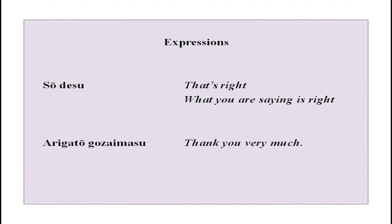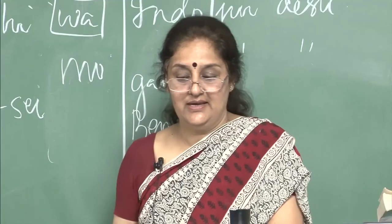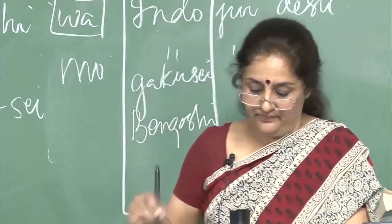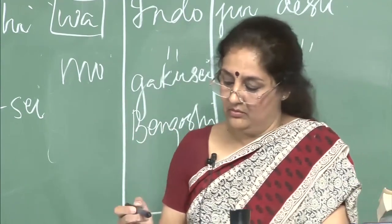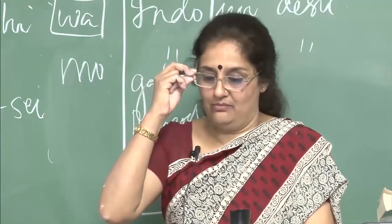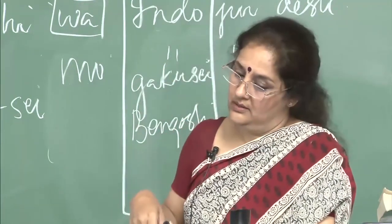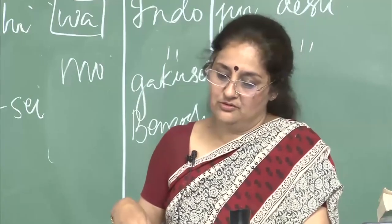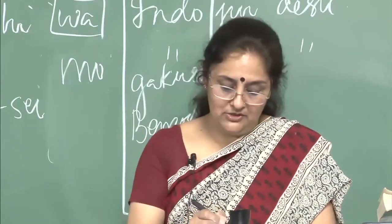There was a small phrase — so desu, that means that is right, and arigatou as you already know means thank you very much. Now we did numbers last time from 31 to 50. Today we will do numbers from 50 to 60 and 60 to 70, very quickly. Gojuu ichi, gojuu ni, gojuu san, gojuu shi or gojuu yon, gojuu go, gojuu roku, gojuu nana, gojuu hachi, gojuu kyuu and rokujuu.